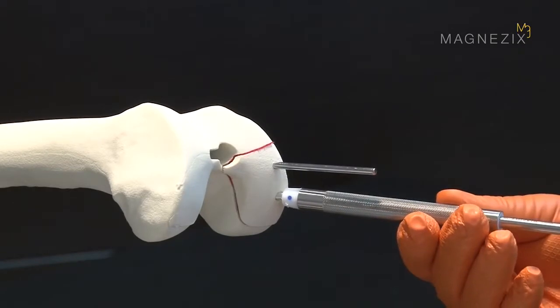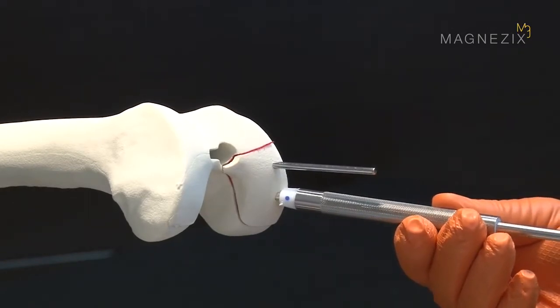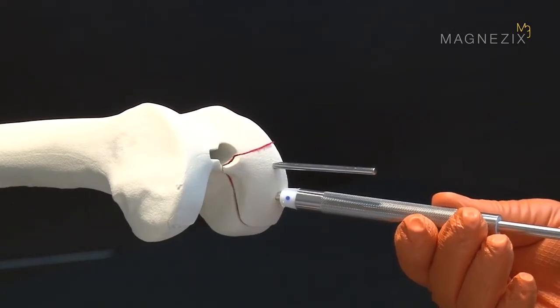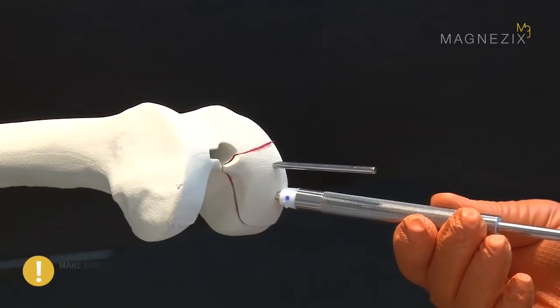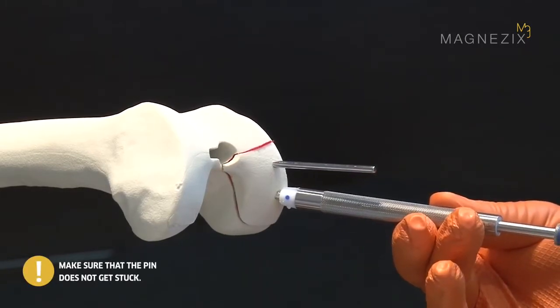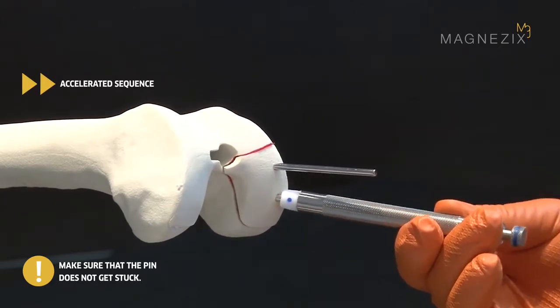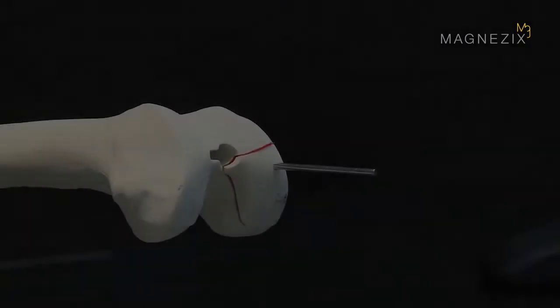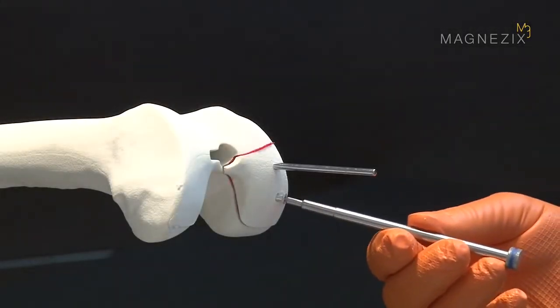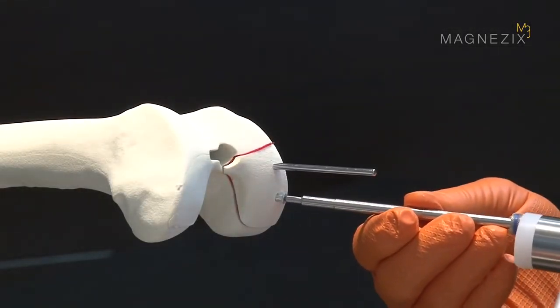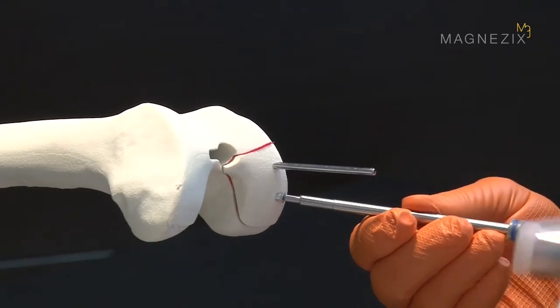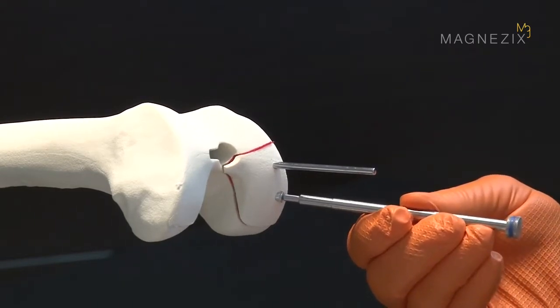The pin is now carefully impacted into the pilot hole using a hammer if necessary. Make sure that the pin does not get stuck during insertion. Only the impactor insert is used for the last few millimeters of the insertion process. This ensures a better view of the implant.